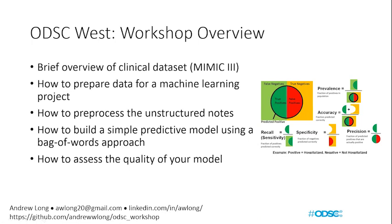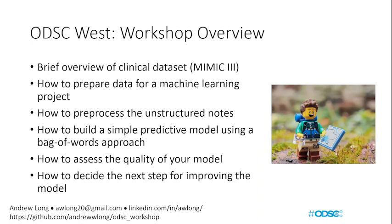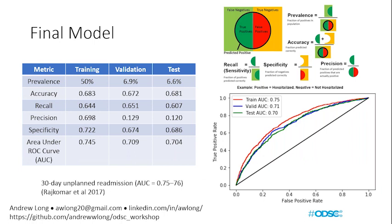We'll spend most of the workshop on Bag of Words in two parts: preprocessing techniques for unstructured notes, and then building a simple predictive model using scikit-learn in Python implementing the tokenizer and vectorizer. Once we've built our model, I'll educate you on how to assess its quality through several performance metrics. Machine learning is never a linear process — you'll want to know how to make the model better. There's a whole laundry list of things you could do to improve it, and I'll talk about using a data-driven approach to decide where to put your time.